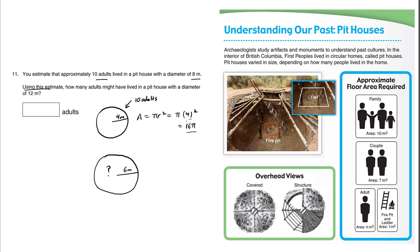So we know that 16 pi, this area, accommodates 10 adults. Now what about the area of the larger circle here? The area of the circle is also pi r squared, but this time the radius is going to be 6. 6 times 6 is 36, so we have this larger area being 36 pi.